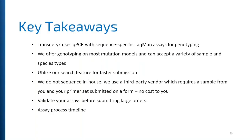Transnetics uses qPCR with sequence-specific TaqMan assays for genotyping. We offer genotyping on most mutation models and can accept a variety of sample and species types. You can use our search feature for faster submissions to find constructs already set up in our database. Sequencing uses a third-party vendor, requires a sample and primer set on a form, and is done at no cost — as is assay design. Please validate your assays before submitting large orders. For the assay process timeline: after submitting a strain information form, it takes up to 72 hours for review (up to 10 business days during high seasonal volume), and possibly up to two weeks for manufacturing.